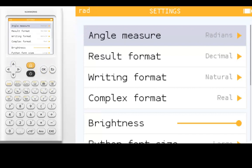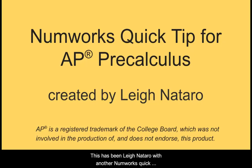Notice now our calculator is set for radian mode. This has been Lee Nottero with another NumWorks Quick Tip for AP Precalculus.